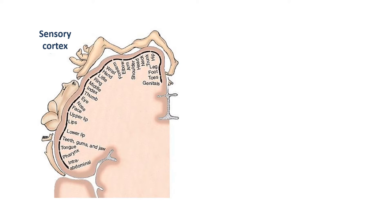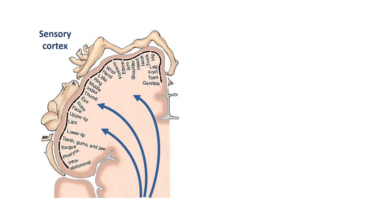All our afferent neurons come in via their tracts through the brain, and then go to specific areas depending on where they're coming from. They're actually organised inside something called the internal capsule, which is almost like a filing cabinet for the neurons - it keeps them all nicely organised to make sure they go to the right part of the sensory cortex.